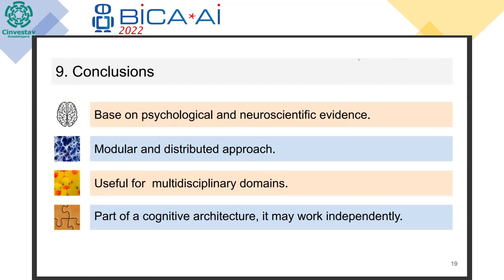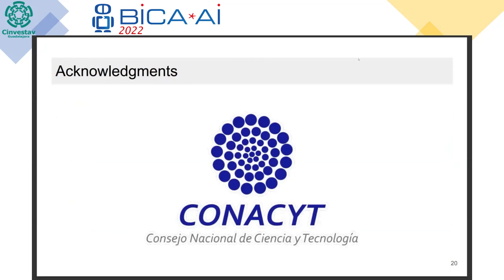In conclusion, this architecture is based on psychological and neuroscientific evidence. It is a modular and distributed system, meaning it can work by itself or be part of a larger distributed system. It is useful for multidisciplinary domains — for example, games, or understanding human cognition. We thank CONACYT for their support.